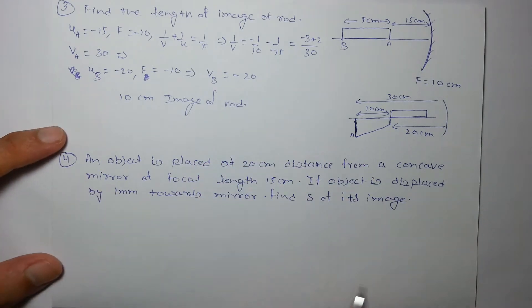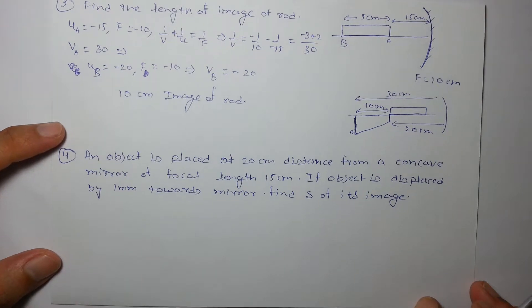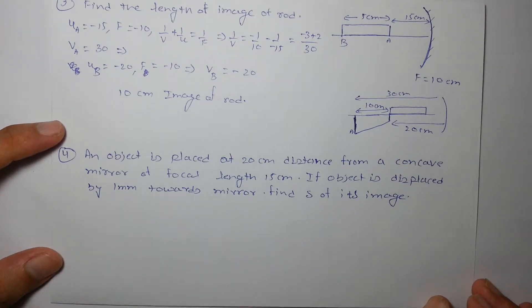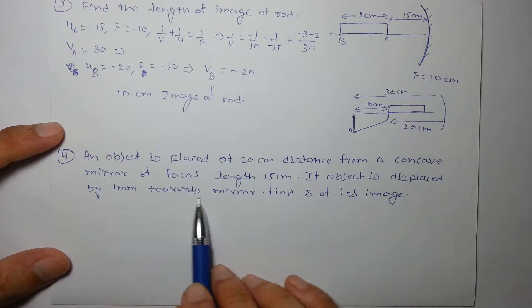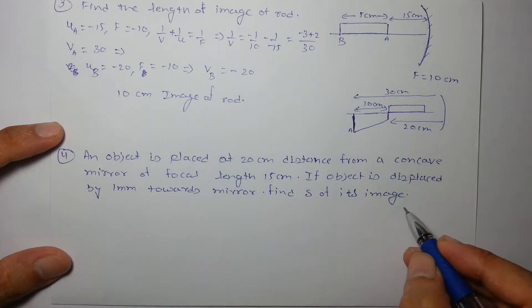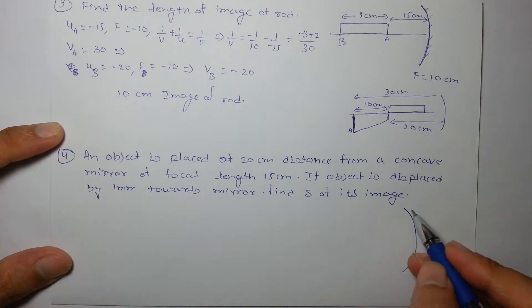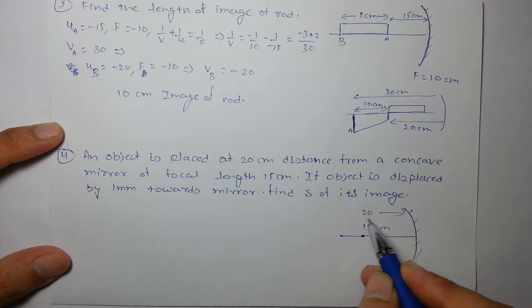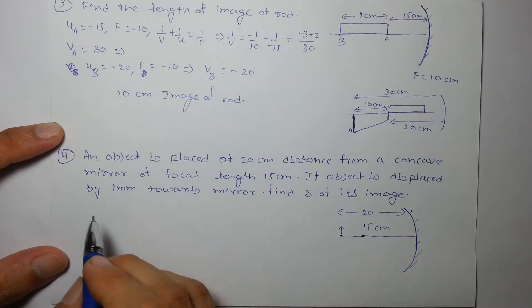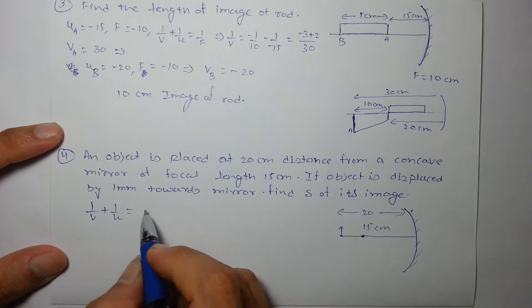The next problem is, there is an object which is placed at 20 centimeter distance from a concave mirror of focal length 15 centimeter. If the object is displaced by 1 mm towards the mirror, find the displacement of its image. So using the expression 1/v + 1/u = 1/f.